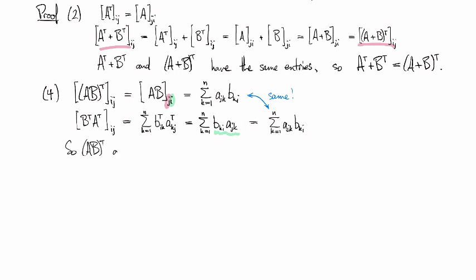So (AB)^T and B^T A^T have the same entries, so they are equal and we are done.